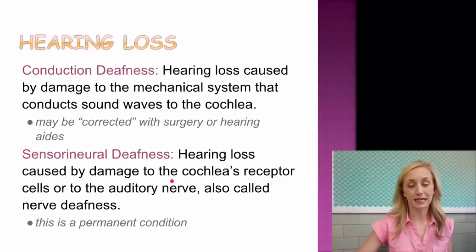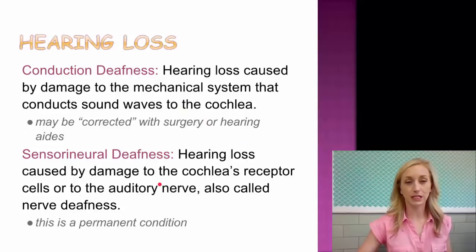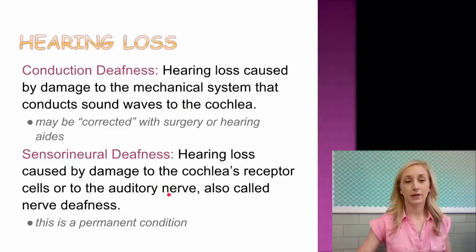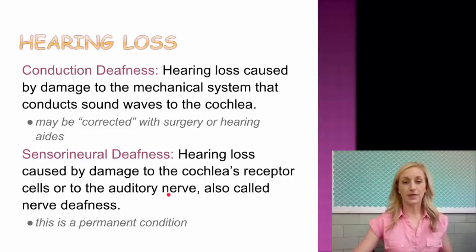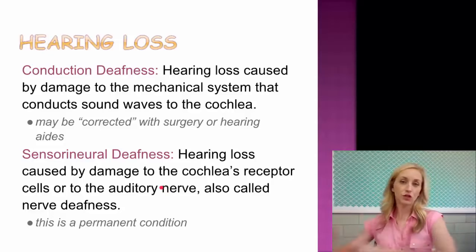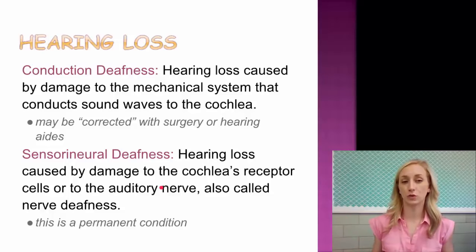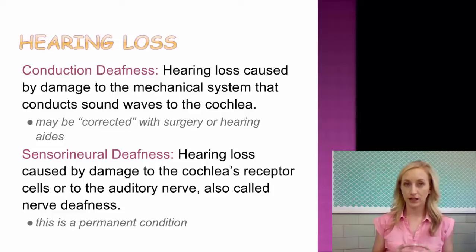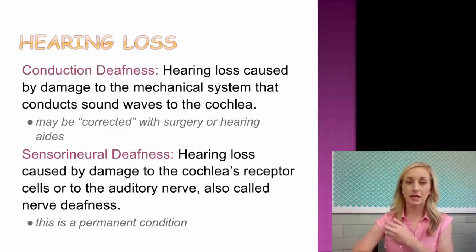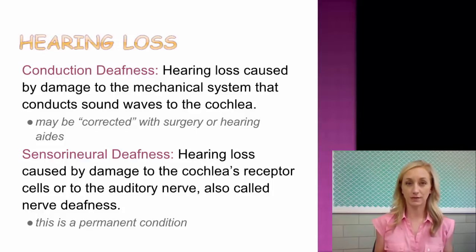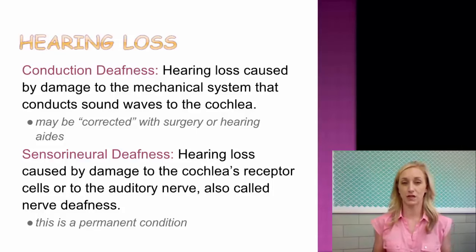There are two different types of hearing loss, and yes, you need to know the difference between them. Conduction deafness is hearing loss caused by damage to the mechanical system that conducts sound waves to the cochlea — so it's not damage to the cochlea itself, but damage before that, specifically to the middle ear. Conduction deafness may be corrected with surgery or even hearing aids.